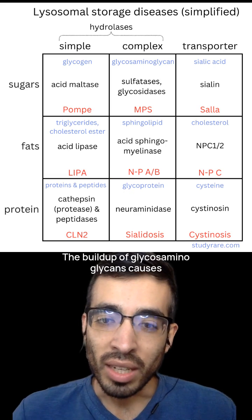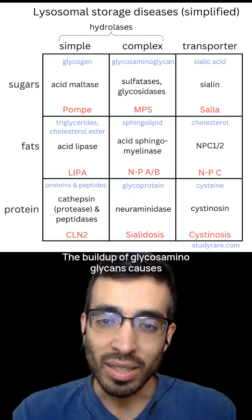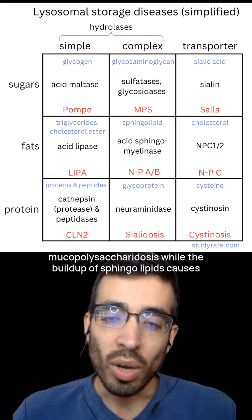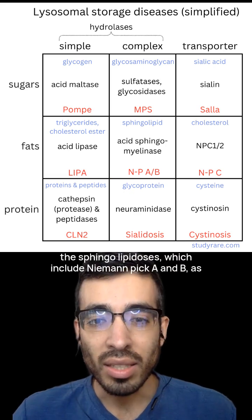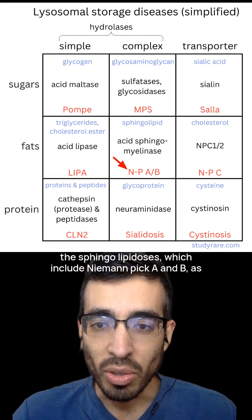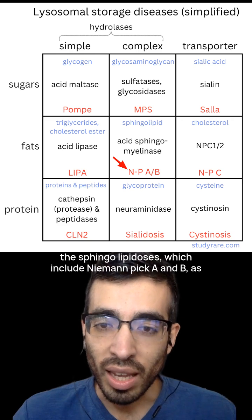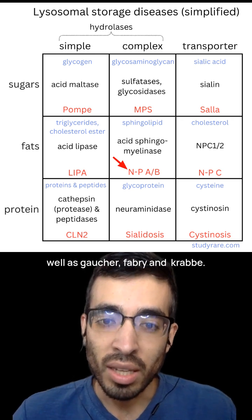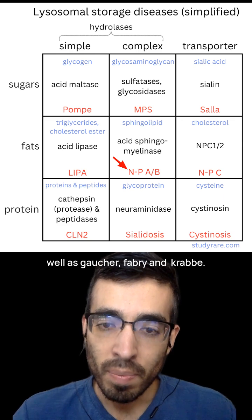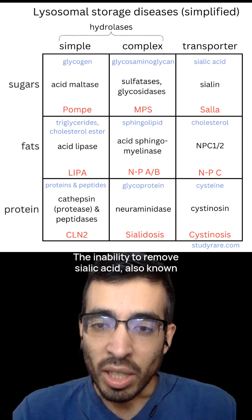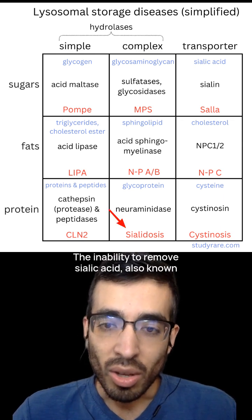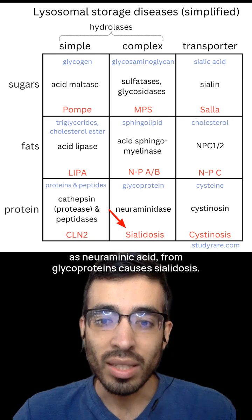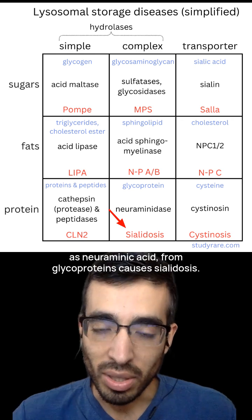The buildup of glycosaminoglycans causes mucopolysaccharidosis, while the buildup of sphingolipids causes the sphingolipidoses, which include Niemann-Pick A and B, as well as Gaucher, Fabry, and Krabbe. The inability to remove sialic acid, also known as neuraminic acid, from glycoproteins causes sialidosis.